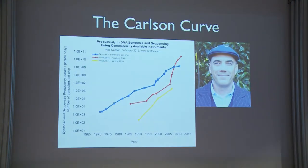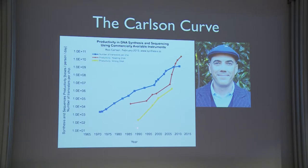Then Illumina took over. This was our productivity curve, and then Illumina took over, and we had a couple more years on the market. But the curve I'll talk about is the yellow one — productivity in writing DNA. The same way that DNA sequencing has been increasing in efficiency, so has DNA synthesis. These curves are from Rob Carlson, who's a biotech writer.